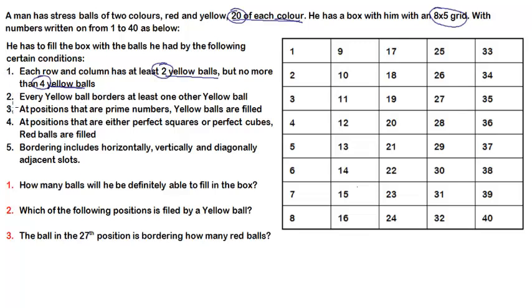The second condition says that every yellow ball borders at least one other yellow ball. The meaning of 'border' here is not certain, so we'll ignore this for now and move to condition 3, which says that at positions that are prime numbers, yellow balls are filled. This is a straightforward condition we can apply directly.